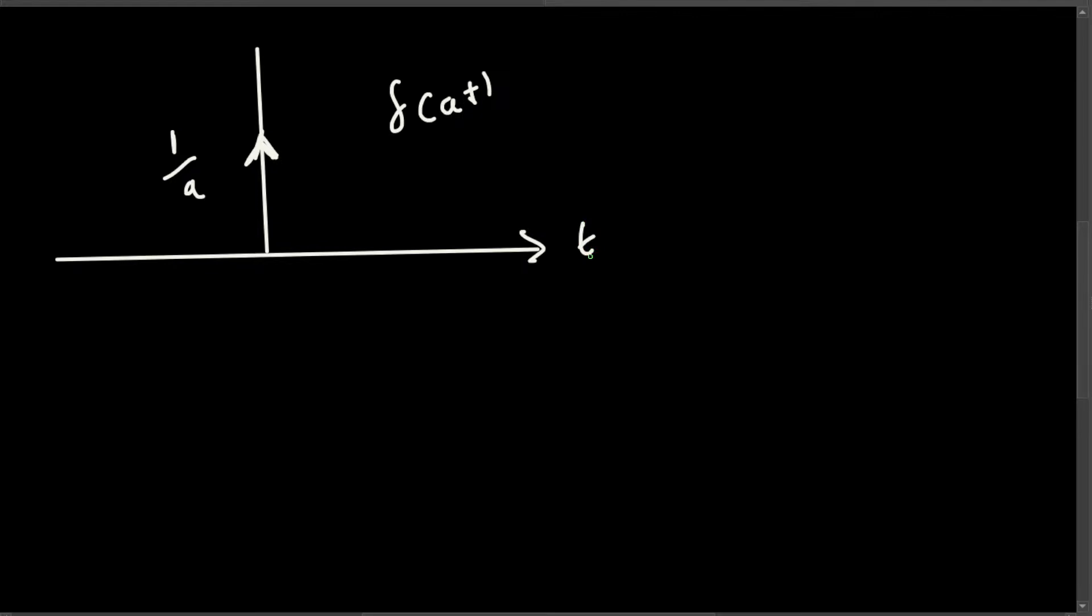So from this we can write some examples. For example, if we have delta of 0.1t, then this is going to be 10 times delta of t because 1 over 0.1 is 10. And if you have delta of 5t, that's going to be 1 over 5 delta of t.